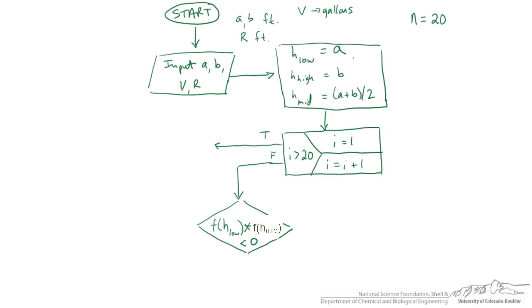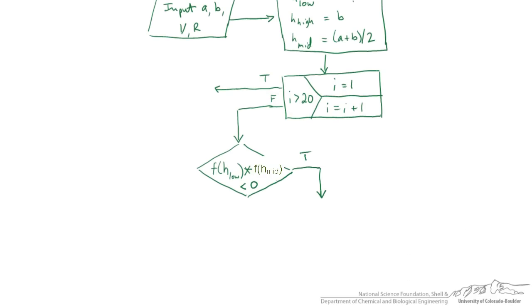If that's true, we want to keep the same h low, but then we want to redefine h high as the old midpoint. That's false. Then we actually do the opposite where we're going to say that h low is now equal to h mid. And then after we do both of those, we're going to come back together.